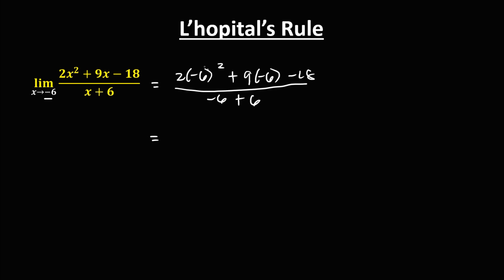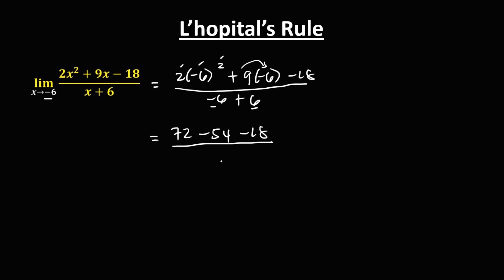To simplify: negative 6 squared is positive 36, and 36 times 2 is 72. Positive 9 times negative 6 is negative 54, then negative 18 over negative 6 plus 6 — this denominator is 0. We have 72 minus 54, that's positive 18, and positive 18 minus 18 is 0 over 0.